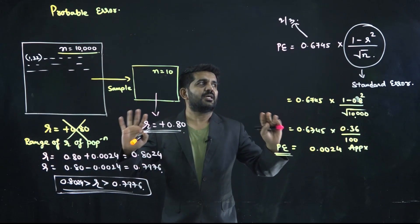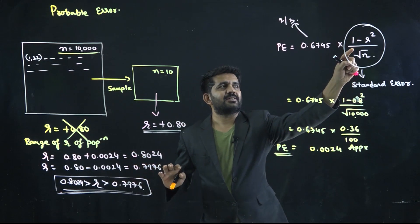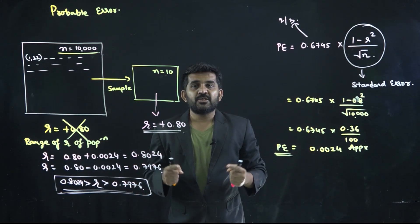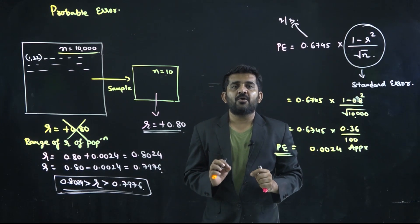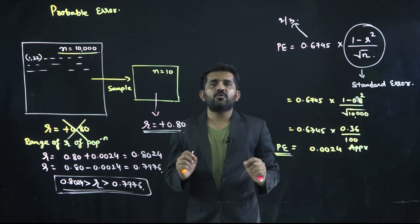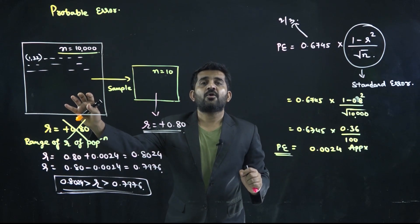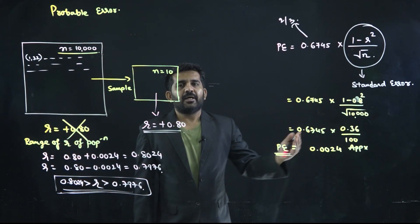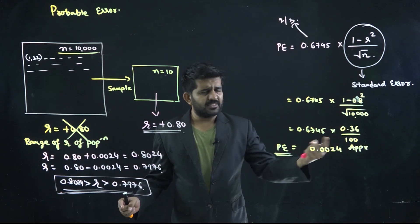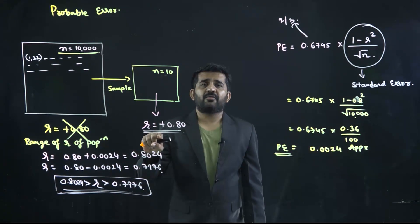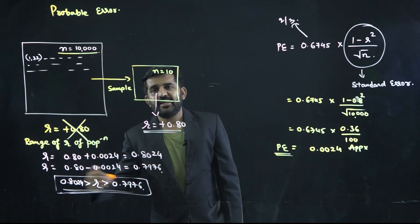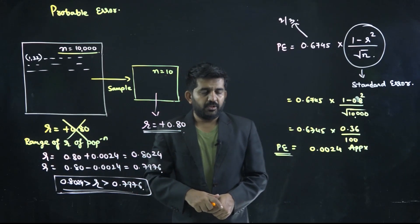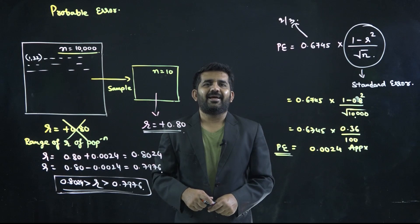So this is the concept of probable error. It is useful when you have found out r of a sample and you want to find out a range of r for the population. By adding and subtracting the probable error from the sample r, you get the range of r for the population. This is how probable error is used.